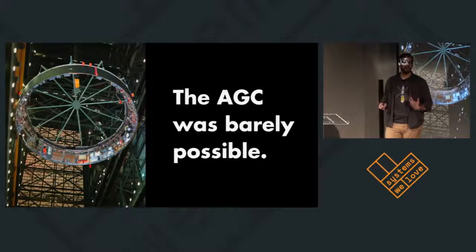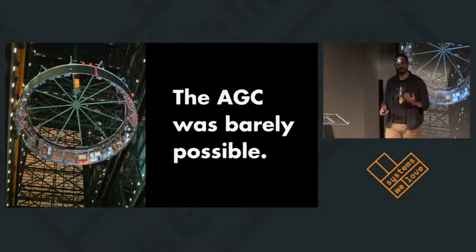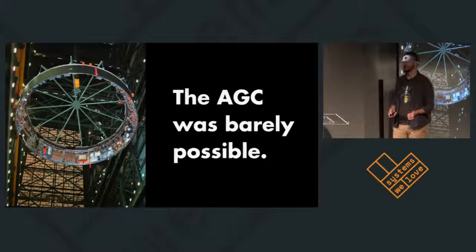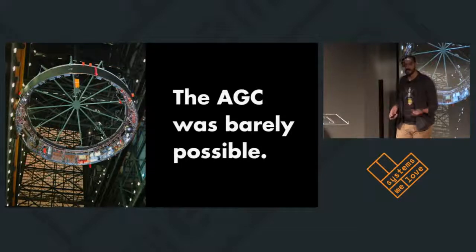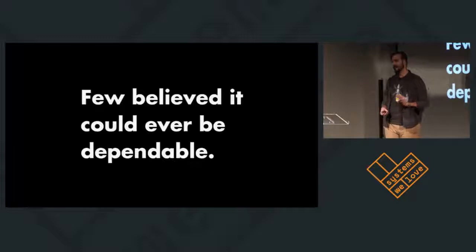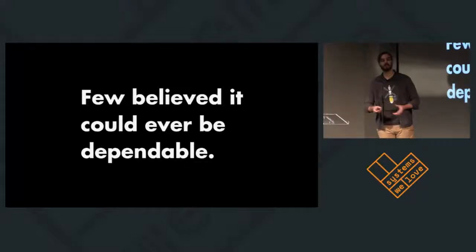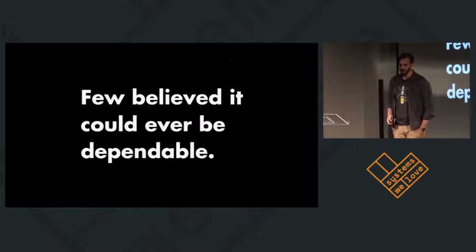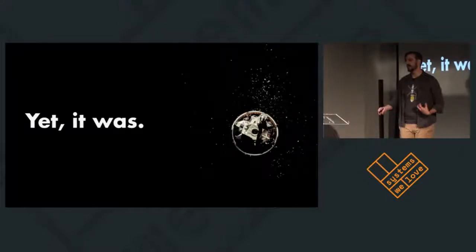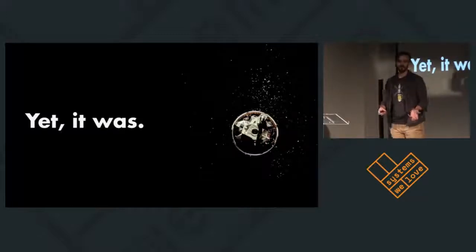So what's interesting about the AGC? And to me, what's interesting about the AGC is that it was barely possible. This is actually the flight computer for the Saturn V rocket. It's so large and so heavy that they made the computer a structural element of the rocket. No one really believed that the AGC could ever be dependable. When they started designing it, it was an open question whether a digital computer could be made to run for more than a few hours at a time, less two weeks that you need to get back and forth to the moon. Yet it was. And how did they manage to do that? Well, they compromised a lot.